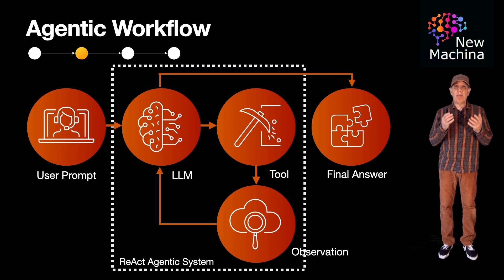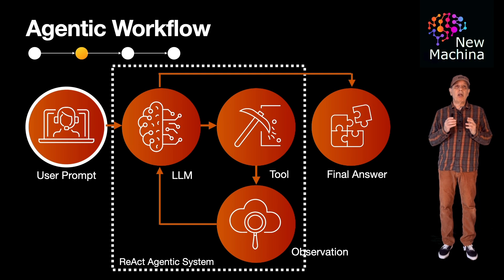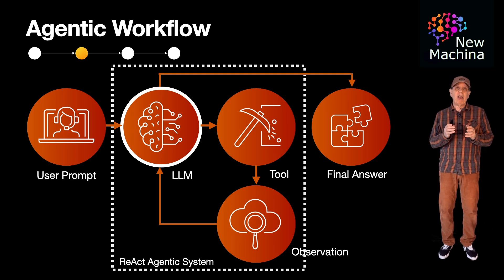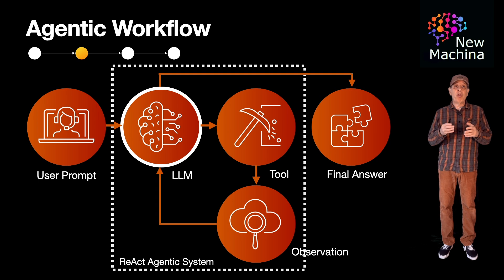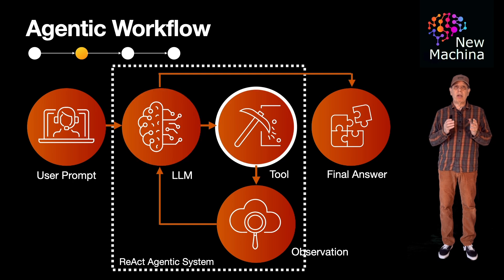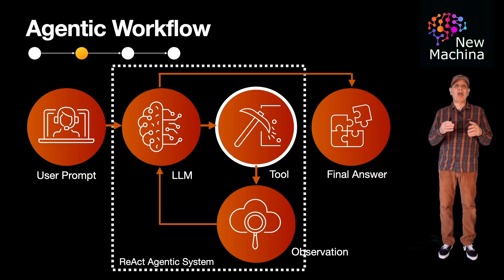Looking at this diagram, you can see a typical ReAct agentic system. A user sends a prompt to the ReAct agentic workflow. The LLM receives the prompt and reasons on potential responses, and if it can, it generates a final response to the user. But if the LLM determines it doesn't have the necessary information, it checks to see if there are any tools available within the ReAct agentic system that can help it get the right data. When this occurs, the LLM directs the agentic system to invoke the tool. There could be many more than one tool integrated into an agentic system, and typically this is the case.